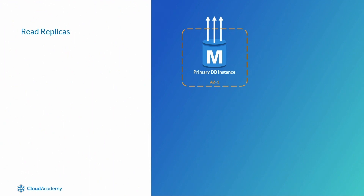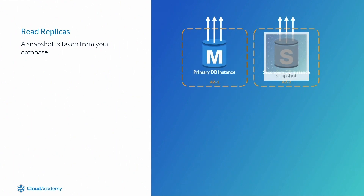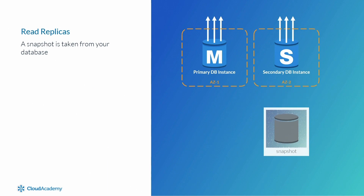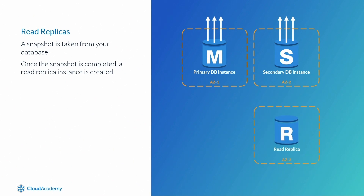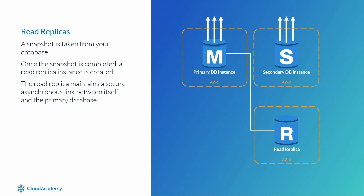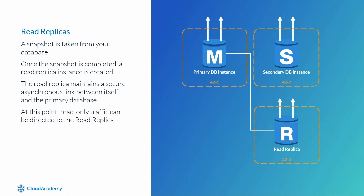For example, let's assume we have a primary RDS instance which serves both read and write traffic. Due to the amount of read-intensive traffic being directed to the database for queries, the performance of the instance has taken a hit. To help resolve this, you can create a read replica. A snapshot will be taken of your database — and if you are using multi-AZ, this snapshot will be taken from your secondary database instance to ensure no performance impacts. Once the snapshot is completed, a read replica instance is created from this data. The read replica then maintains a secure asynchronous link between itself and the primary database.